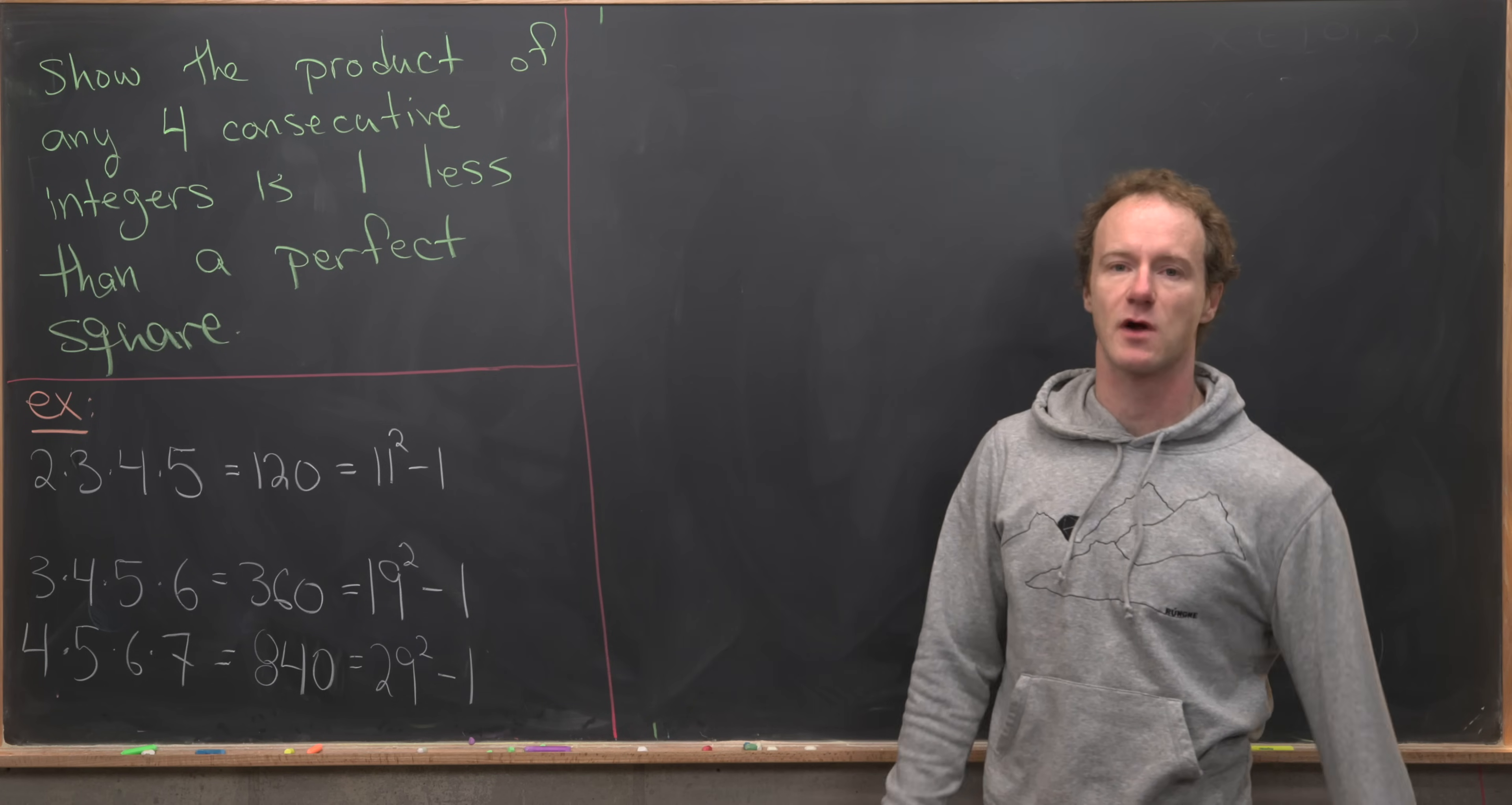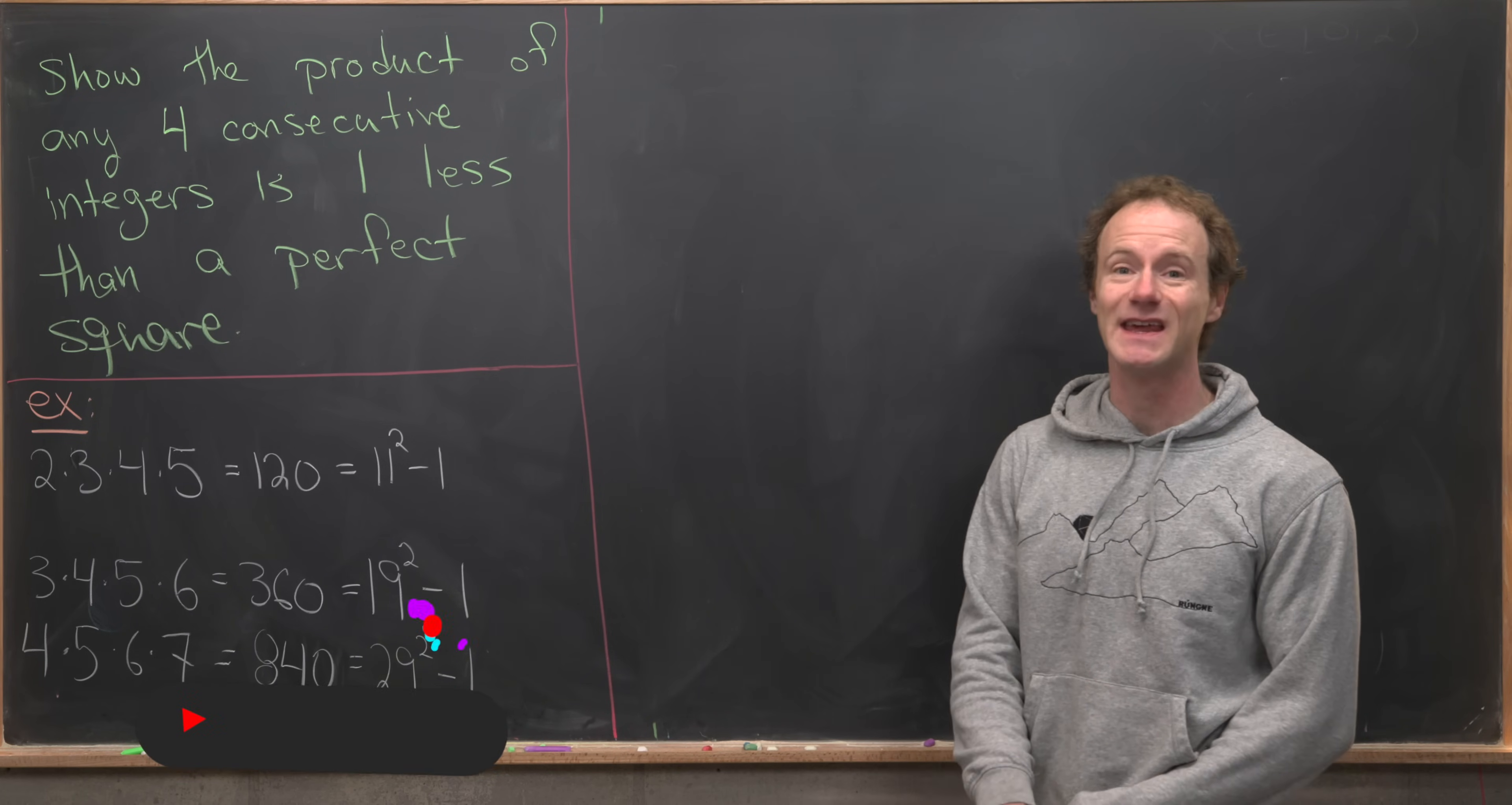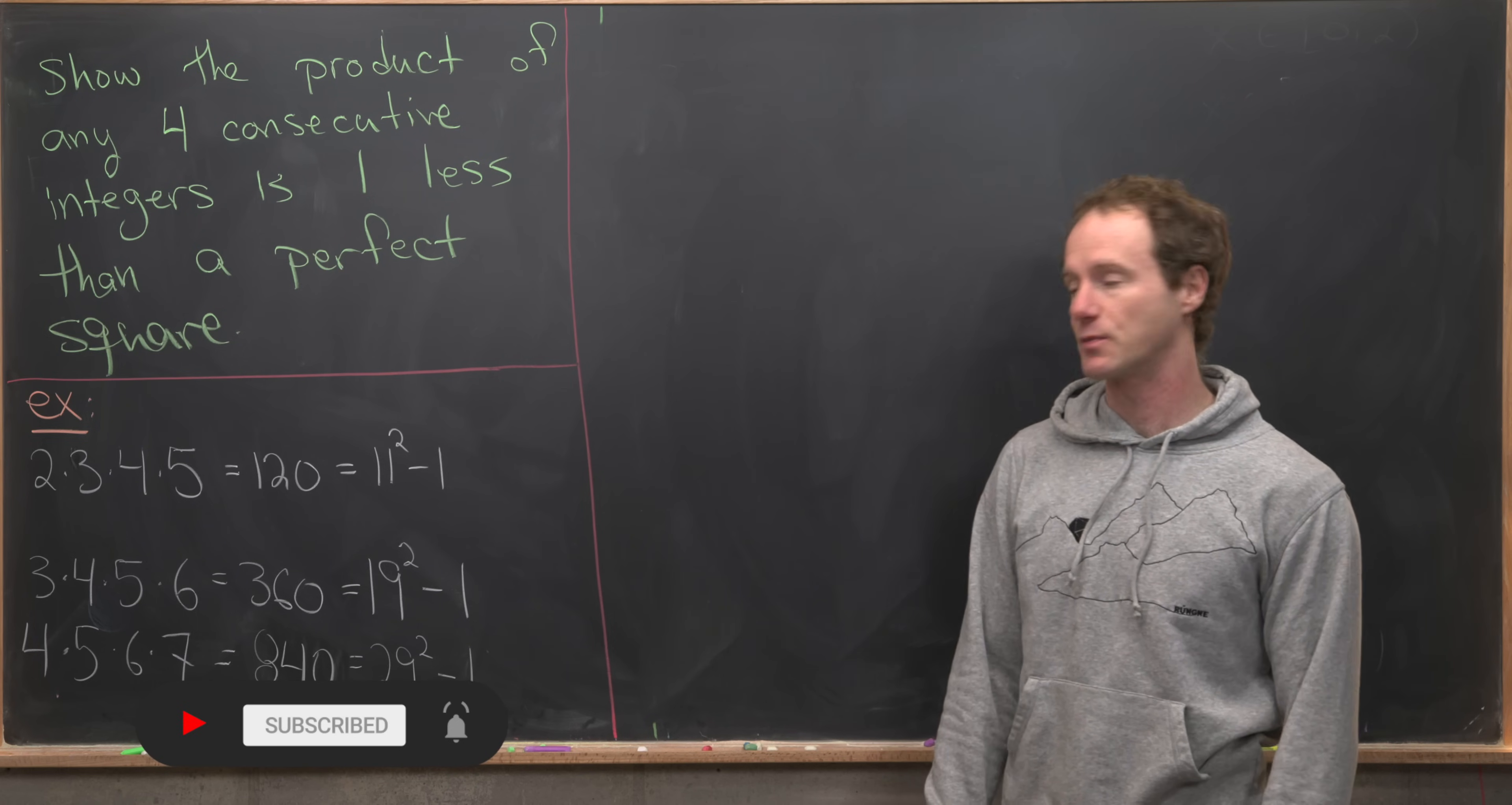Here we're going to look at a nice viewer suggested problem. So our goal is to show that the product of any four consecutive integers is one less than a perfect square.